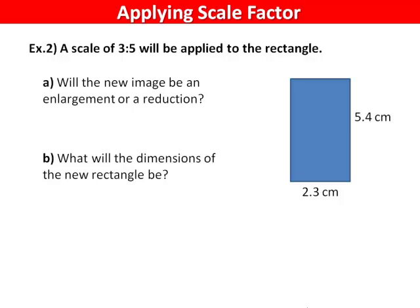In example two, a scale of three to five will be applied to the rectangle. Will the new image be an enlargement or a reduction? The ratio three to five is the same as three divided by five, or zero decimal six. Because the decimal value is smaller than one, the image will be a reduction.